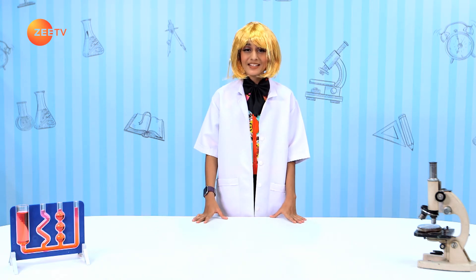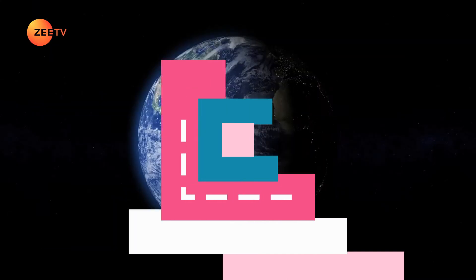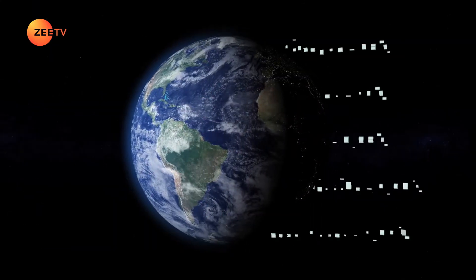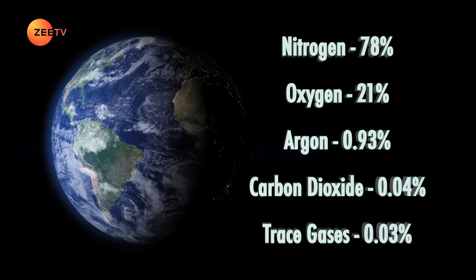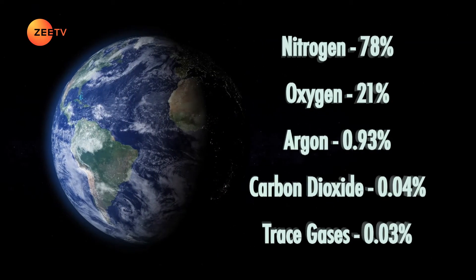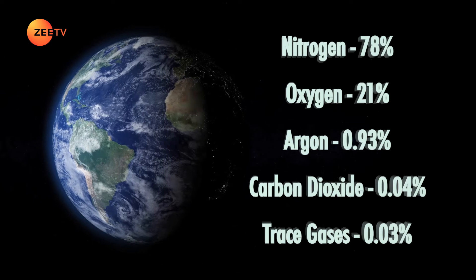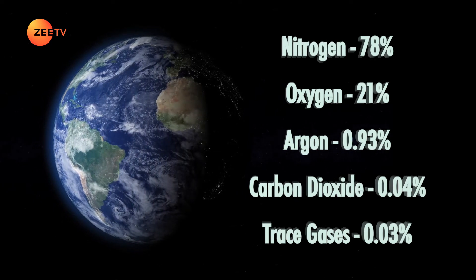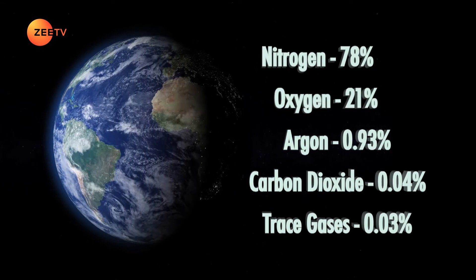What is air? Air is the general name for the mixture of gases that make up the Earth's atmosphere. On Earth, this gas is primarily nitrogen, oxygen, argon, carbon dioxide, and many trace gases.